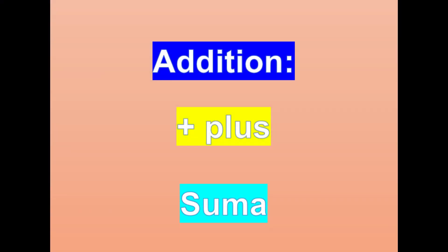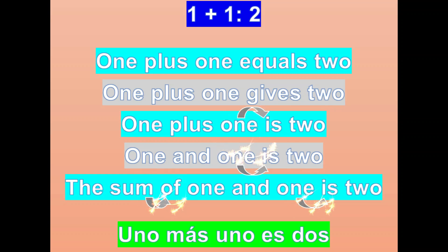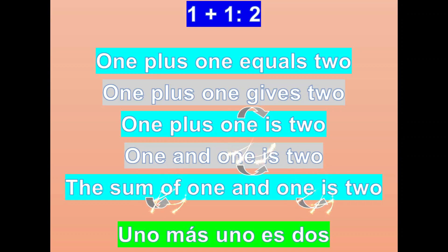De primero tenemos addition. En inglés, con el signo más, diremos 'plus'. Hay varias maneras de decirlo — cada uno se queda con la que más le guste, pero es bueno intercambiarlas para variar. One plus one equals two. Otra forma sería: one plus one gives two. Or: one plus one is two. También: one and one is two. También podemos decir: the sum of one and one is two.